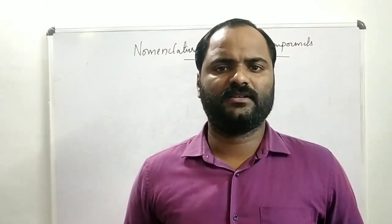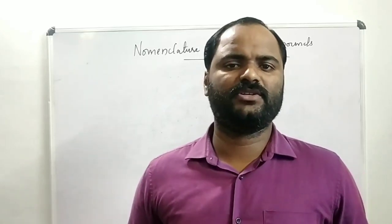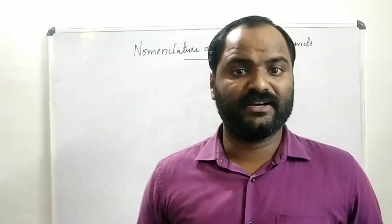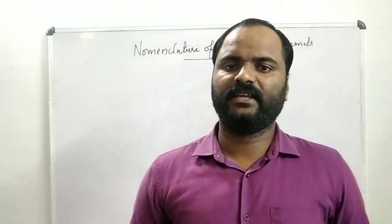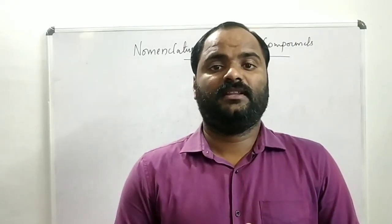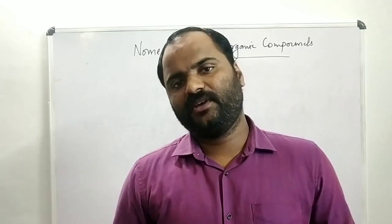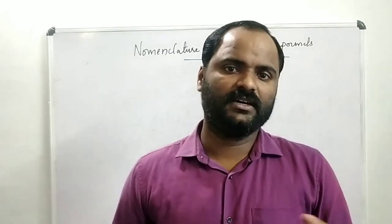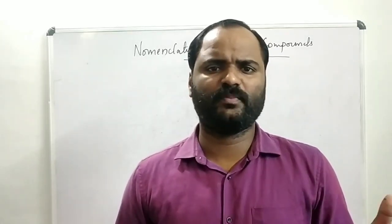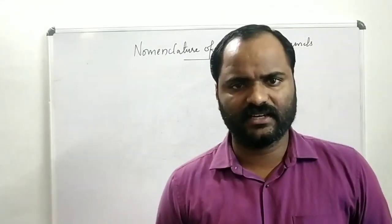Hello everyone, welcome to today's chemistry class. Today we are going to discuss the topic nomenclature of organic compounds. Nomenclature is nothing but naming — how can we name an organic compound? The naming of organic compounds is given by IUPAC, that is the International Union for Pure and Applied Chemistry. They give a particular name to a compound, known as the IUPAC name. In naming, we have two systems: the first one is the IUPAC system, and the second one is the common system or trivial system. The common name is obtained from the sources where the substance or compound is formed.